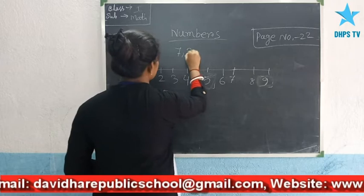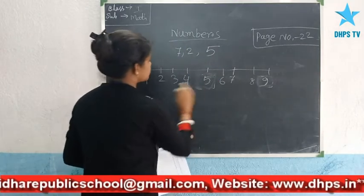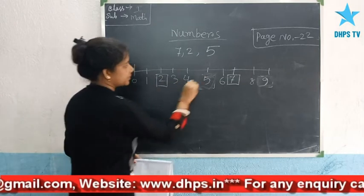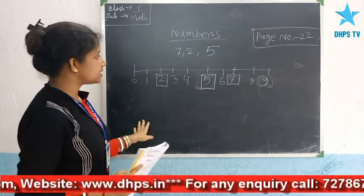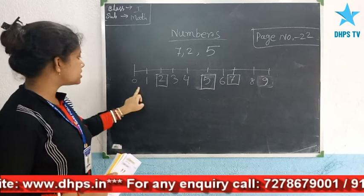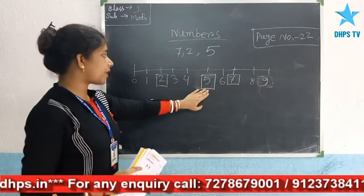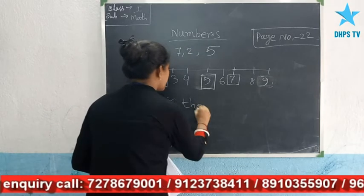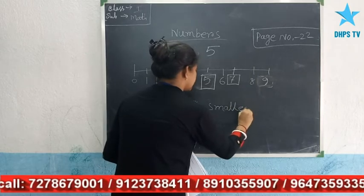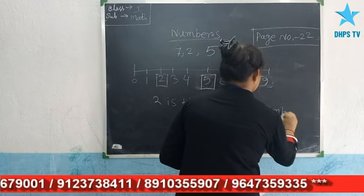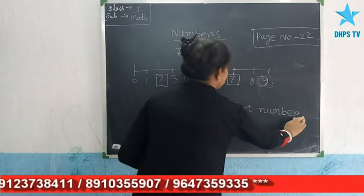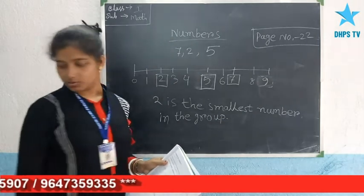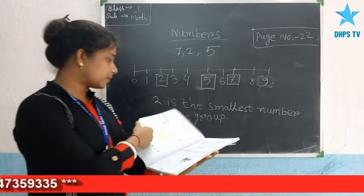The third one is 7, 2, and 5. This is the number line, so just mark all the numbers. Where is 7? Here. Then 2 and then 5. Now see what is the nearest number to 0? See — 2 is the nearest number to 0. Then comes 5 and then 7. So 2 is the smallest number in this row. So all the remaining problems you can solve by yourself. Thank you, students.